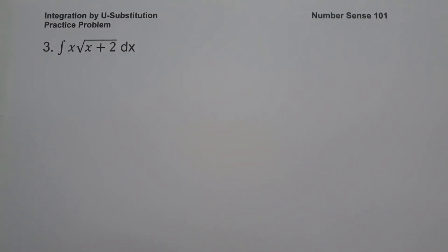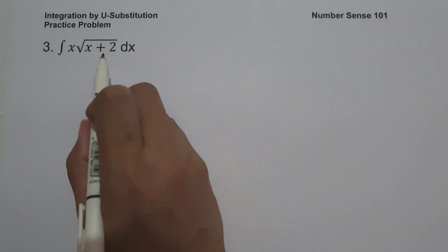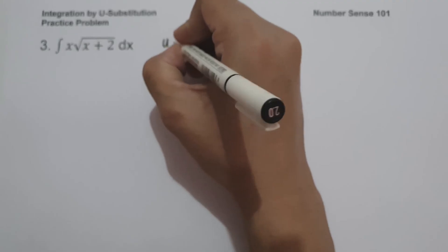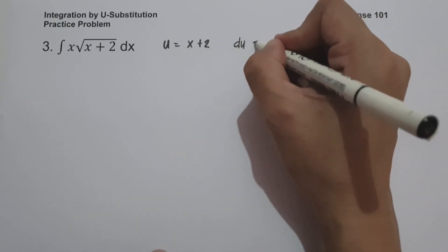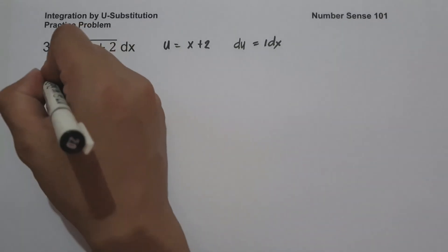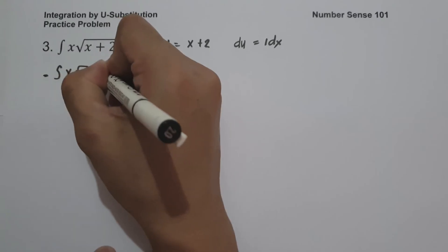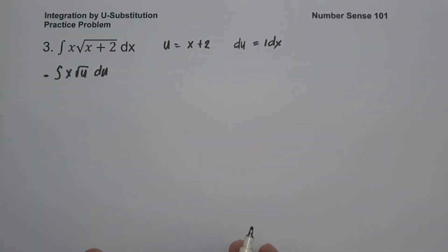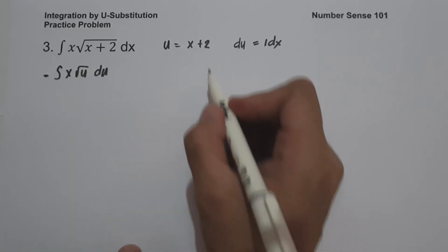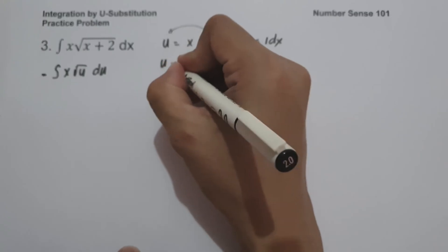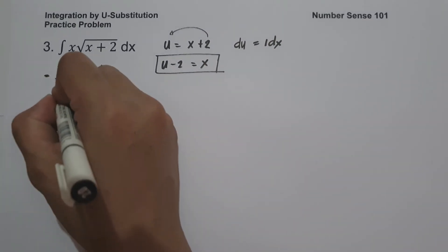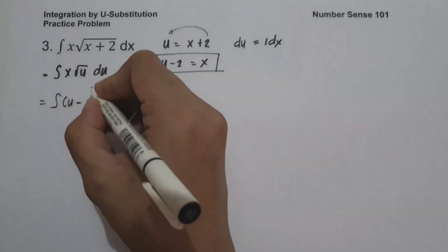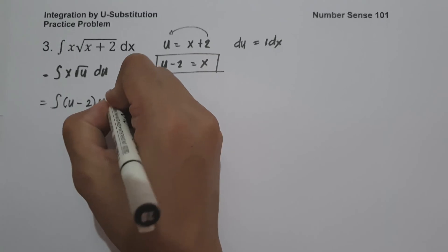On example number 3, what is the anti-derivative of x multiplied by the square root of x plus 2, dx? We have a radicand, and whenever we have a radicand, that is the value of u. So u equals x plus 2, and du is the derivative of x plus 2, which is 1 dx. Therefore we have the anti-derivative of x times the square root of u, du. Since we cannot eliminate x directly, we rearrange: u minus 2 equals x. Substituting, we write the square root of u as u raised to one-half.